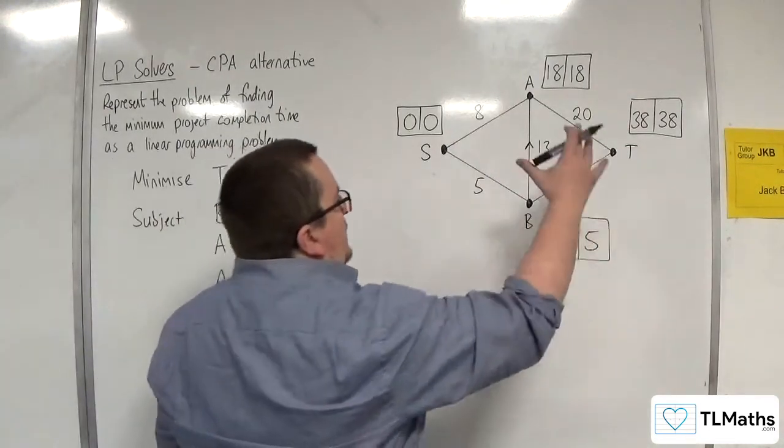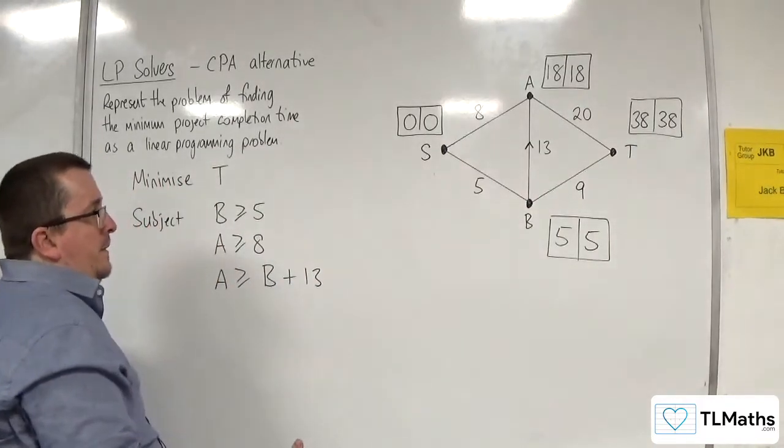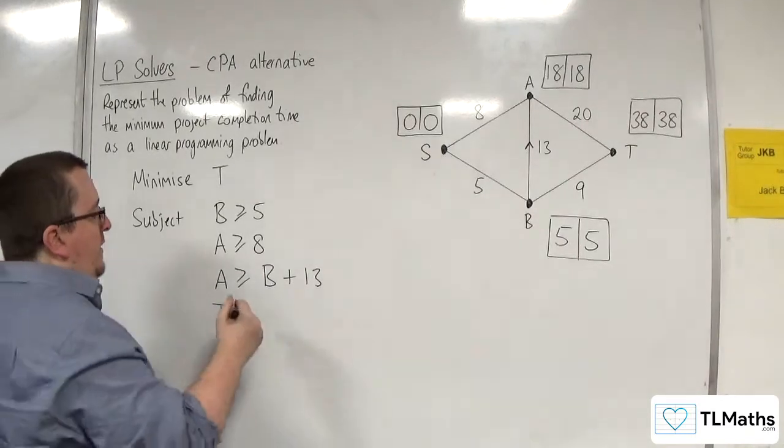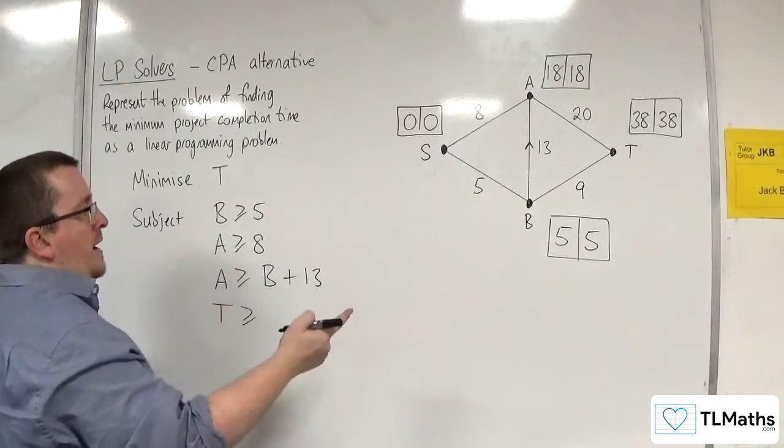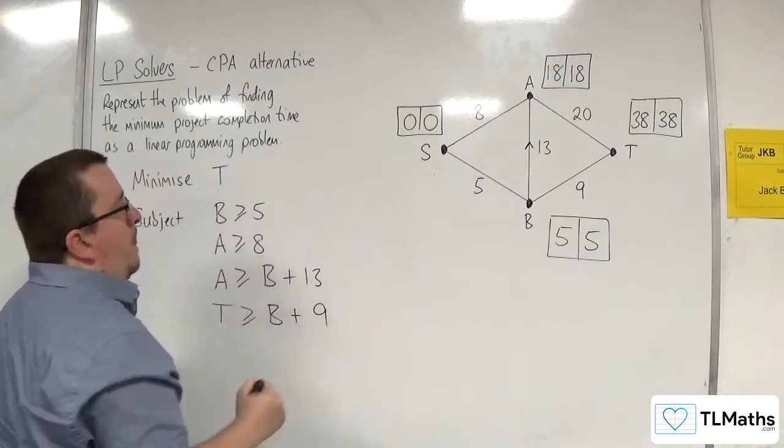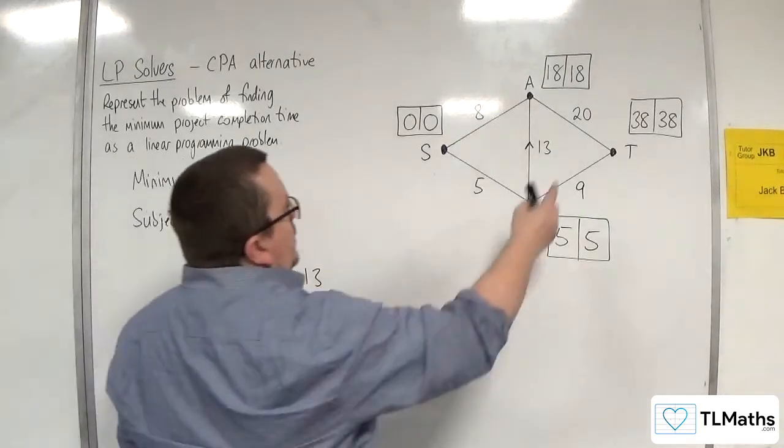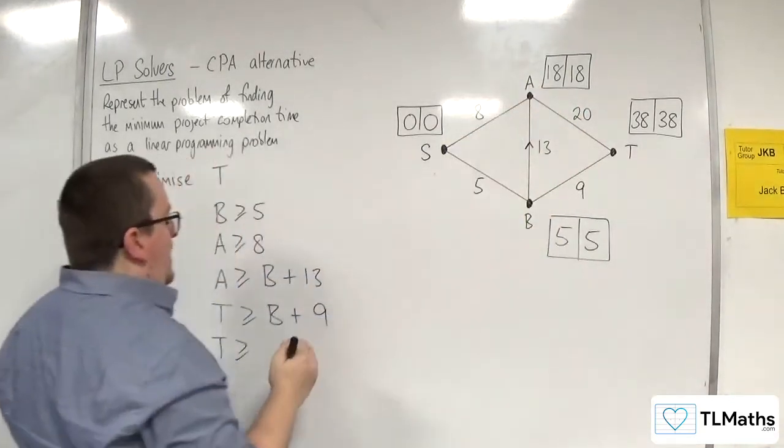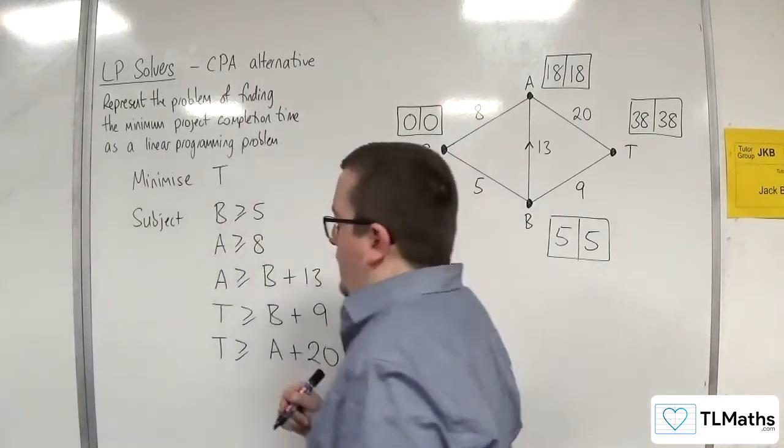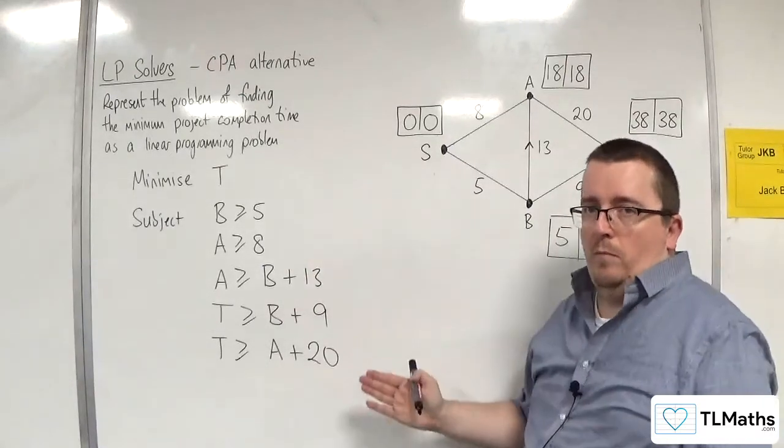Then for T, B, T we know is 9. So I can write down that T has got to be greater than or equal to 9 plus whatever value is at B. And T has also got to be greater than or equal to 20 plus whatever value is at A. And so that is my linear programming problem.